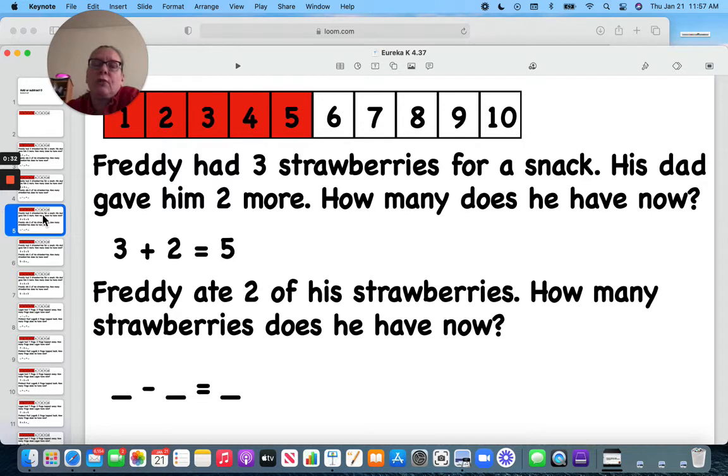Freddy ate two of his strawberries. How many does he have now? So we have five minus two, five minus two, and we get three.